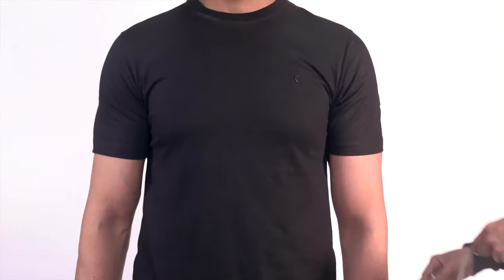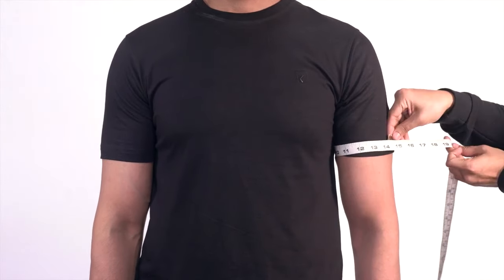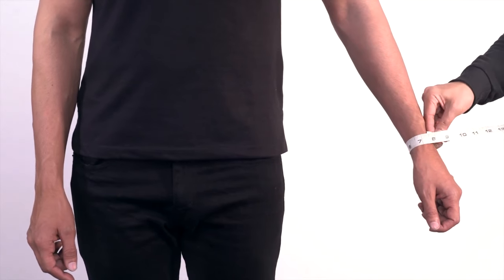Determine bicep circumference by wrapping the tape around the fullest part of your upper arm. Measure the wrist by circling the tape above the wrist bone.